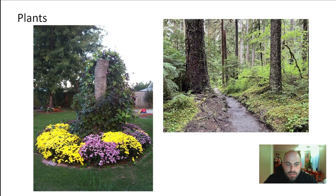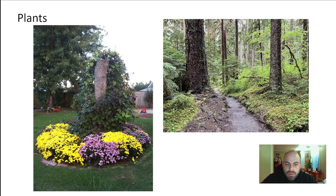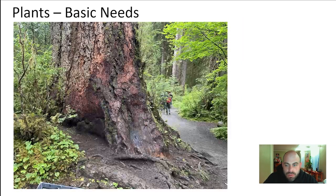So what is a plant? A plant is a multicellular photosynthetic autotroph that has cell walls made out of cellulose. That's a very specific definition: multicellular photosynthetic autotroph with cell walls made out of cellulose.